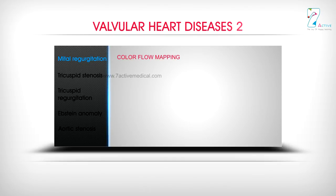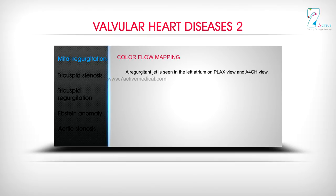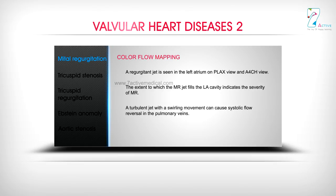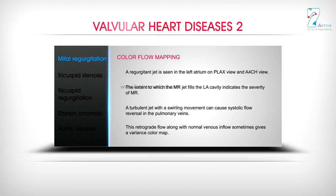Colour Flow Mapping: A regurgitant jet is seen in the left atrium on PLAX view and A4CH view. The extent to which the MR jet fills the LA cavity indicates the severity of MR. A turbulent jet with a swirling movement can cause systolic flow reversal in the pulmonary veins. This retrograde flow along with normal venous inflow sometimes gives a variance color map.